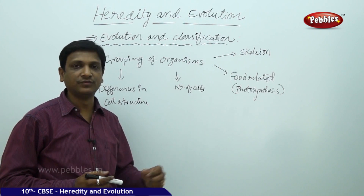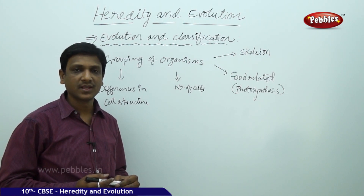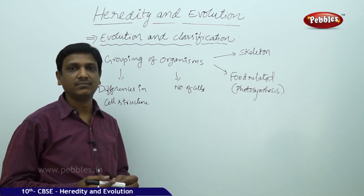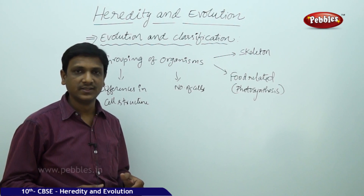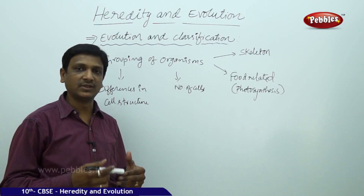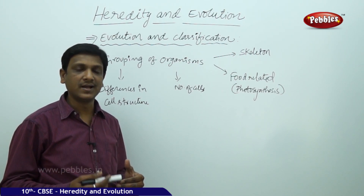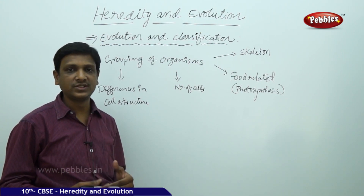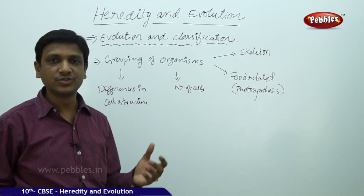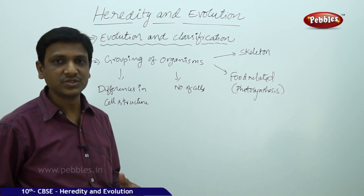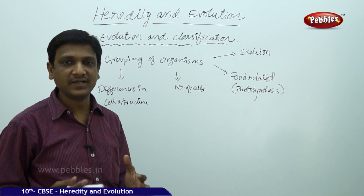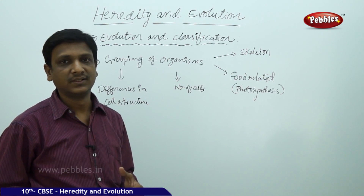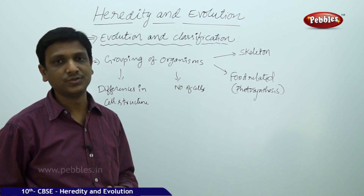Sometimes, accidentally, certain organisms may get isolated or join with some other group and continue their progeny there. After a long period, if brought back to their original group, they may not be able to reproduce with the original members. This shows that variations have accumulated significantly, making it a new species.